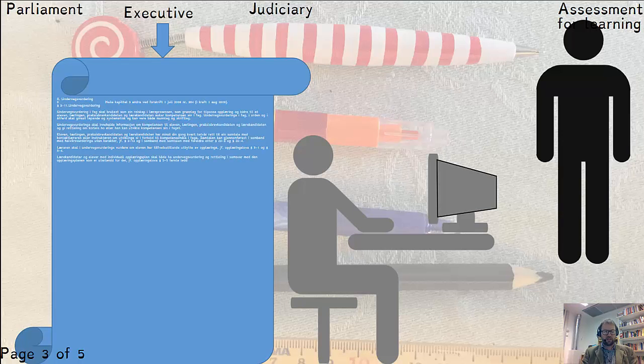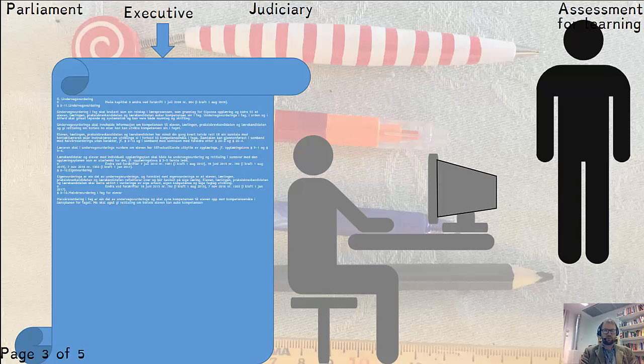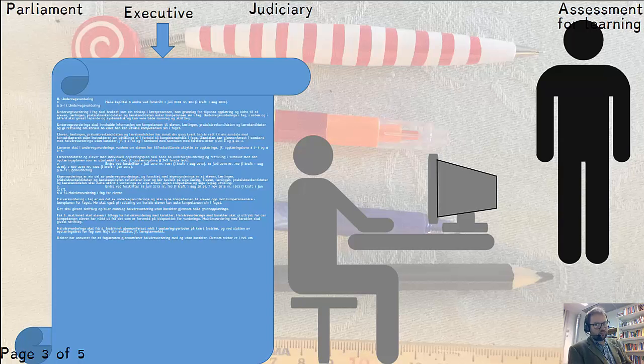Notice that I've put these three branches of government up at the top here because the reform that took place took place in the executive arm, which is the regulations of law. There wasn't so much legal resolution, but there was a difference in the regulations, which is technically the executive branch.